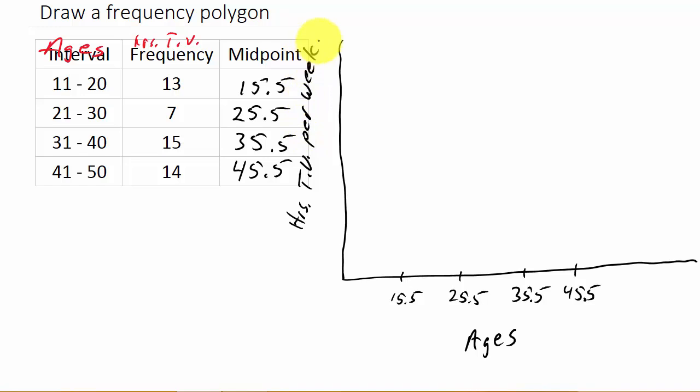Okay. And then we need some numbers going up here. So you can see we have to go all the way up to 14. So I guess we could go up in, I'm sorry, 15. So I guess we could go 2, 4, 6, 8, 10, 12, 14, 16. So 2, 4, 6, 8, 10, 12, 14, and 16.